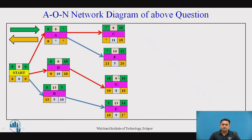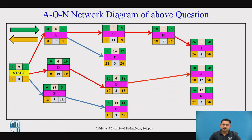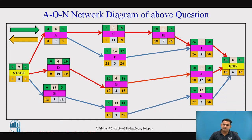In this network diagram all activity times — that is forward times and backward times with float — have already been presented. Later we will see how the forward path times and backward path times are obtained. Activity H is dependent on C, I is dependent on H as well as F, J is dependent on G, and K is dependent on E.